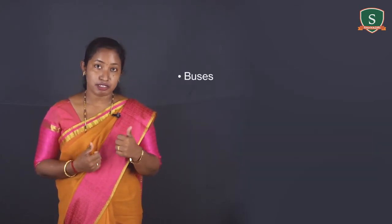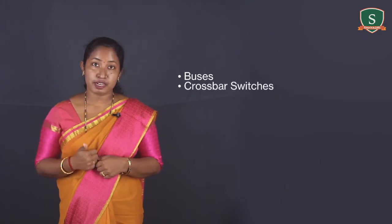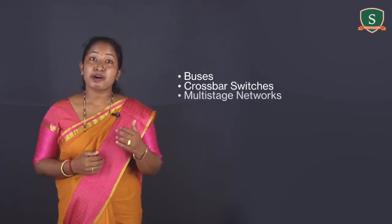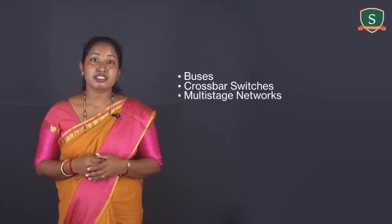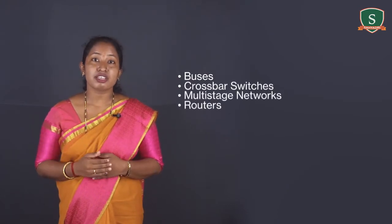Dynamic networks include buses, crossbar switches, multi-stage networks, and routers, which are often used in shared memory multiprocessors.